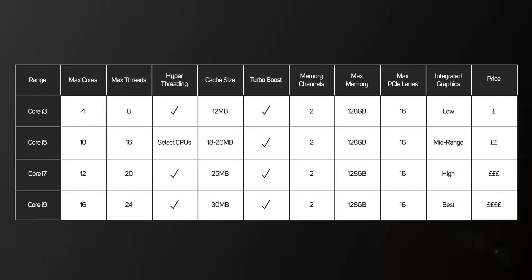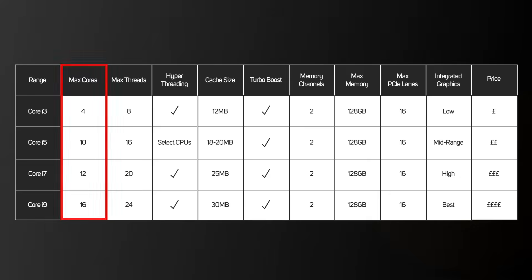Generally speaking, either of the CPU family's specifications will be described in terms of cores, threads and cache, plus other features such as integrated graphics. For the 12th gen Core family ranges, core count tops out at 4, 10, 12 and 16 for the i3, i5, i7 and i9 ranges respectively. And as you'd expect, cache on the CPU also increases across the ranges too.